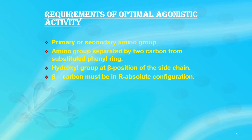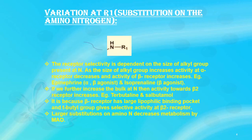Let's discuss Part 1: variation at R1, that is substitution on the amino nitrogen. This amino group is important for adrenergic agonistic activity. If we check all the structures of drugs in this category — epinephrine, phenylephrine, terbutaline, etc. — we observe that each drug has a terminal primary or secondary amino group.